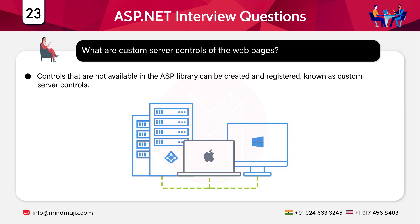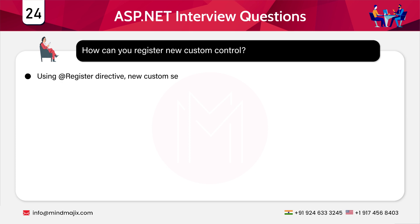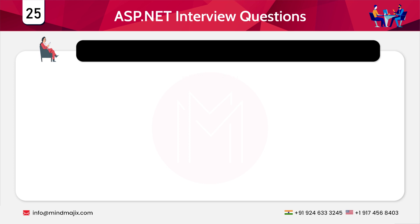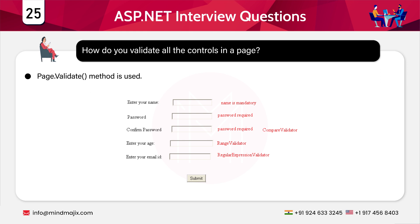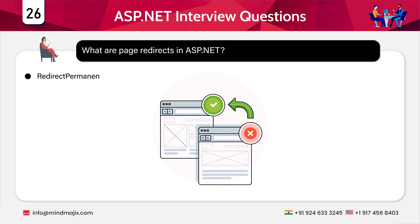The next question is: what are the custom server controls of web pages? Controls that are not available in the ASP library can be created and registered, and these are known as custom server controls. To register a new custom control, you simply use the Register directive. To validate all controls on a page, you use the Page.Validate() method.